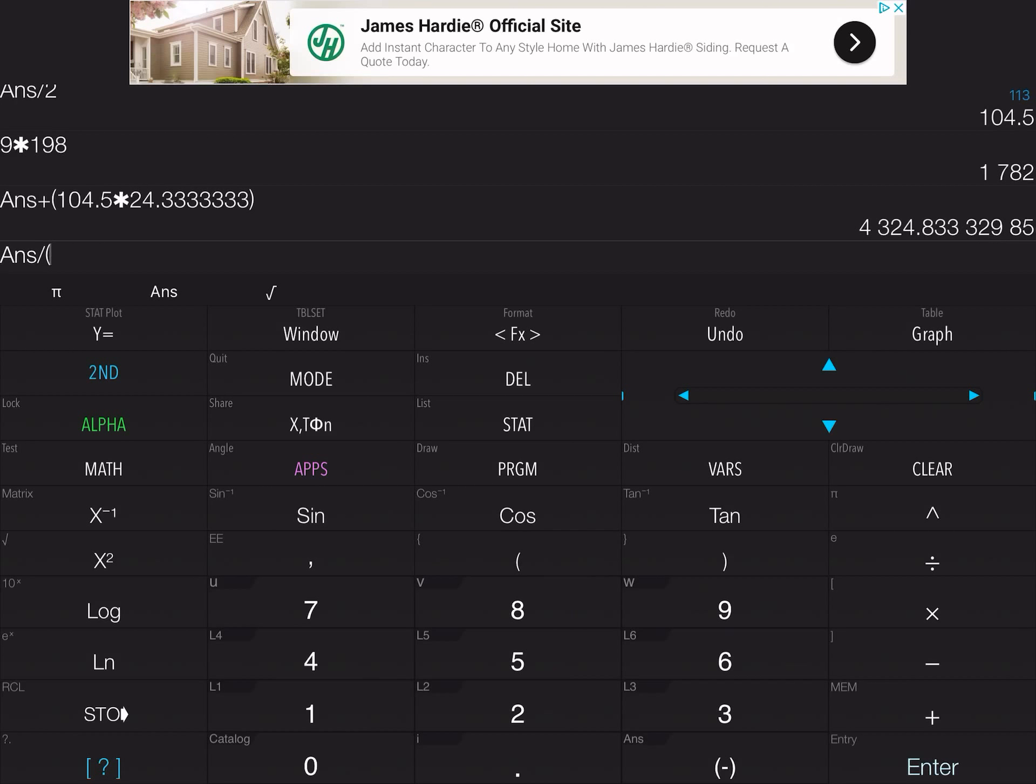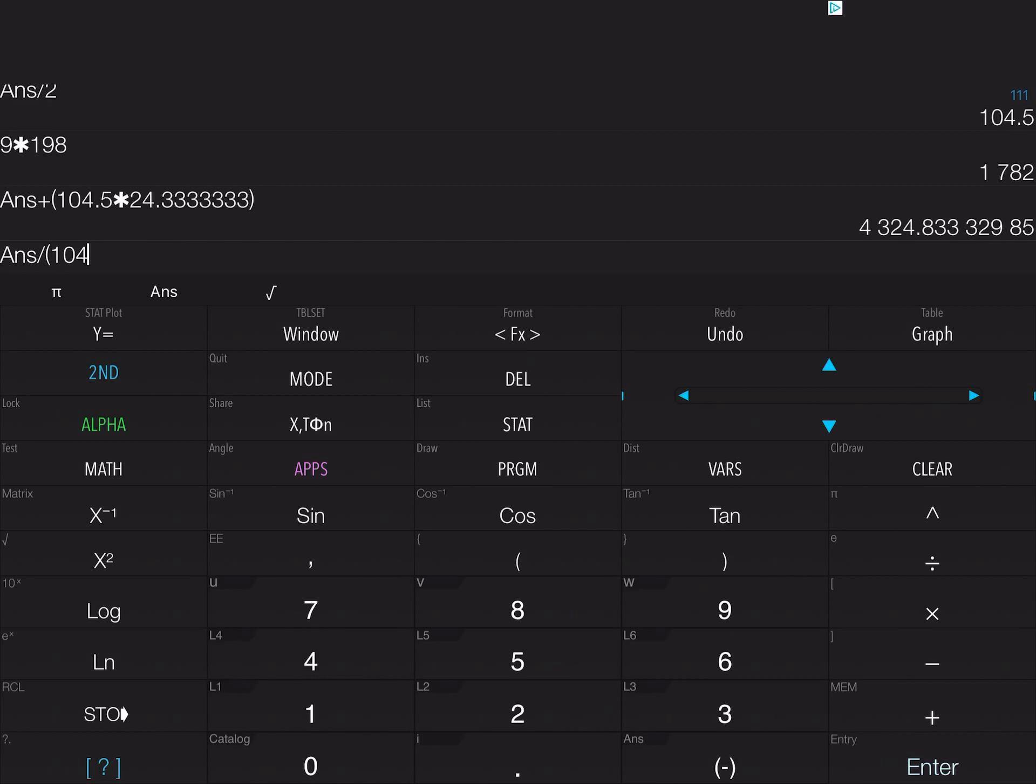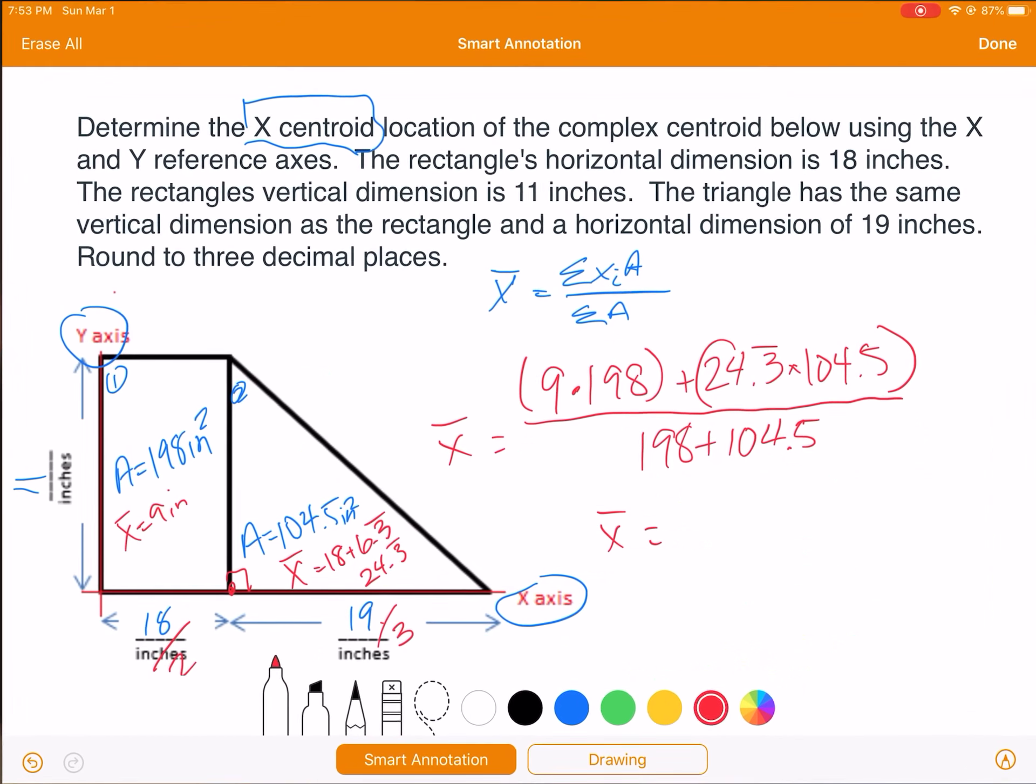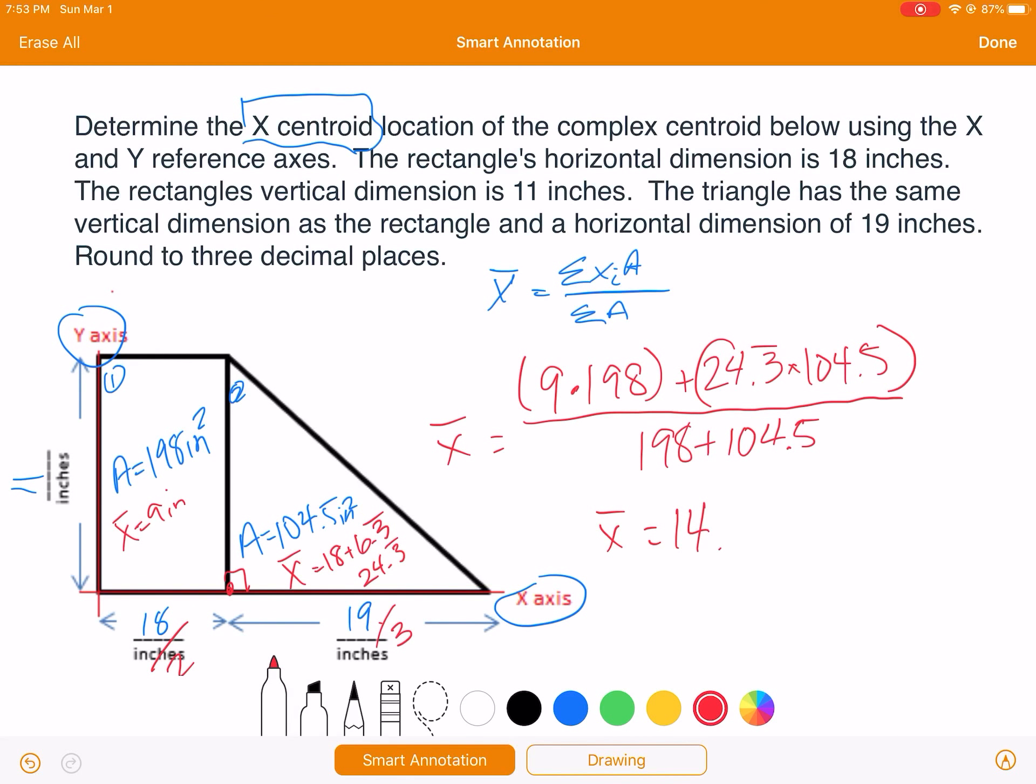So that gives me 14.297 if I round it. And let's just check to make sure 14.297 inches makes sense. So 18 inches and 14, we put it past nine by about five, so that's the influence of the triangle is about that far. That is our answer.